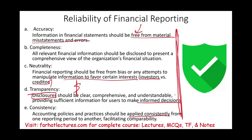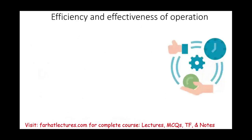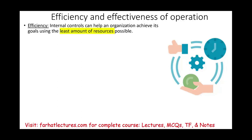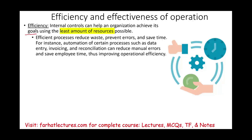The second objective is to promote efficiency and effectiveness of operations, which is a secondary concern for the auditor. Efficiency means achieving goals using the least amount of resources — reducing waste, preventing errors, and saving time. For example, automation of processes such as data entry, invoicing, and reconciliation can reduce manual errors and save employee time, thus improving efficiency. The auditor will look at this only if it's relevant to financial reporting.